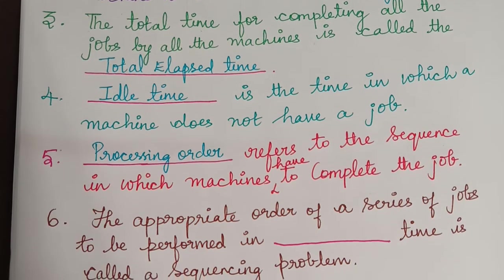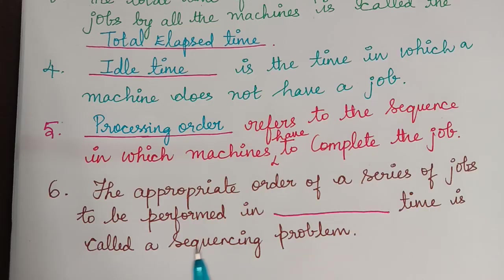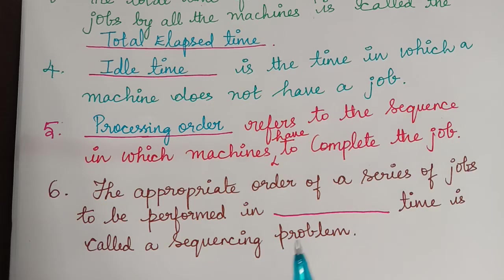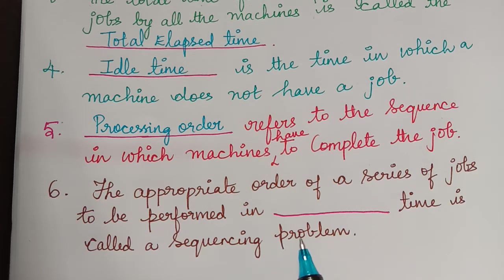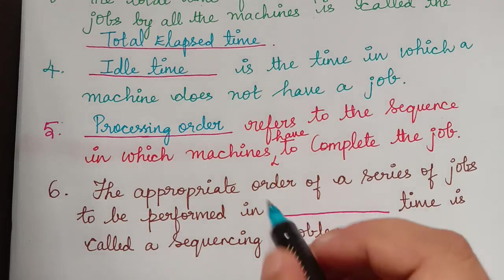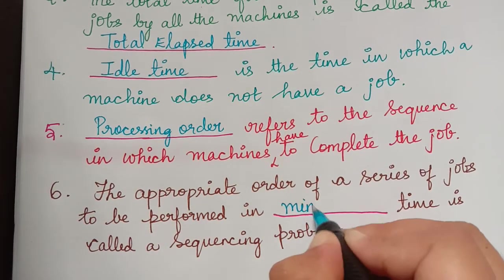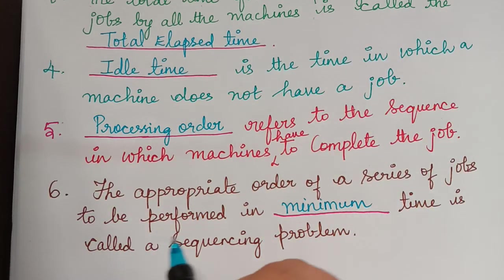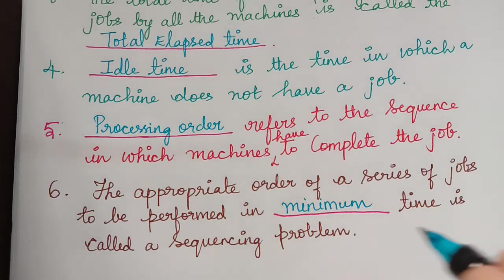The appropriate order of a series of jobs to be performed in dash time is called a sequencing problem. The main aim of a sequencing problem is to reduce the working hours — that is, to keep the time as minimum as possible. So the answer is minimum. The appropriate order of a series of jobs to be performed in minimum time is called a sequencing problem.